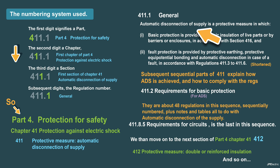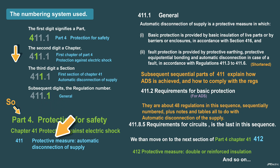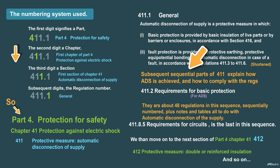And that is general, and you can see it here. Automatic disconnection of supply is a protective measure. So it goes part 4, chapter 41, 411, 411.1. Then subsequent parts of 411 explain how ADS is achieved. So 411.2 is a requirement for basic protection for ADS. There are about 48 regulations in this sequence, sequentially numbered, plus notes and tables, all to do with automatic disconnection of the supply. 411.8.5, requirements for circuits, is the last in this sequence.